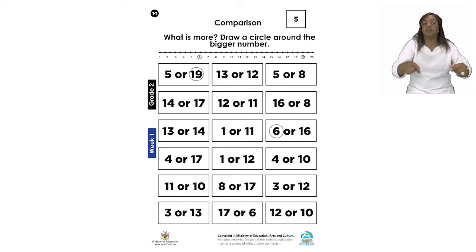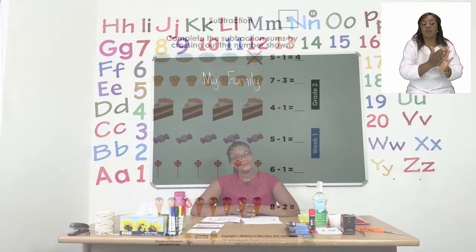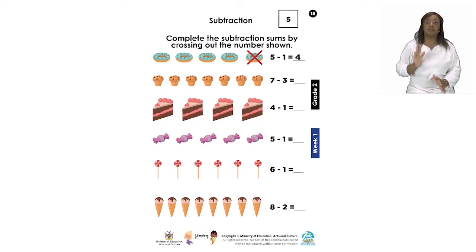Let us now move on to page 15. On page 15, we are doing subtraction, also known as taking away. Here we have some delicious food that we sometimes eat with our families even. Now, you are being asked to complete the subtraction sums by crossing out the number shown. For number 1, they have already done it for you.